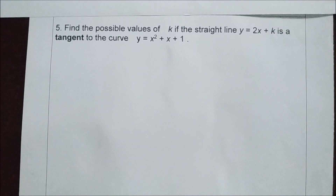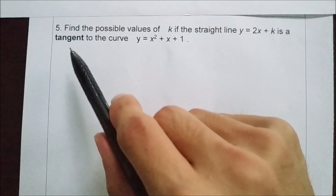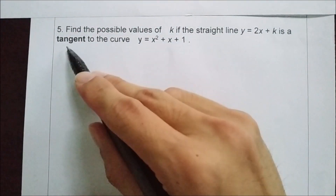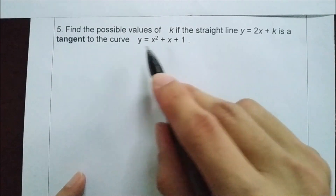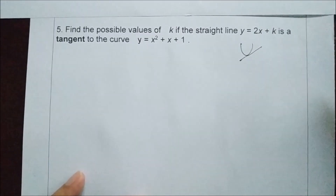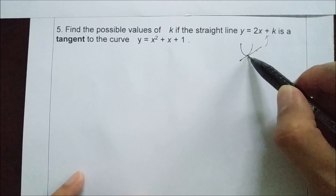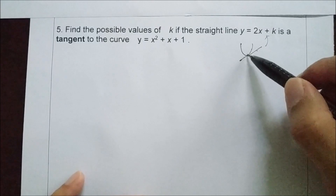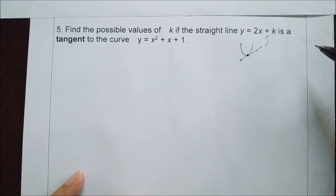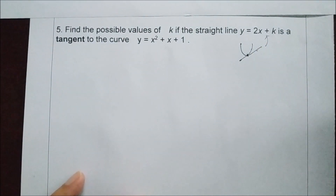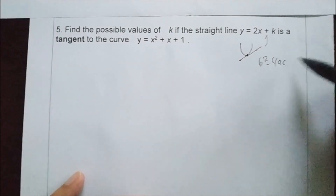Question number 5: Find the possible values of k if the straight line y equals 2x plus k is a tangent to the curve y equals x squared plus x plus 1. The word 'tangent' is key here. If this curve is given and the straight line is tangent to the curve, it means the line only touches at one point. So the intersection point is one point, meaning if you combine the two equations, you have one root. This implies b squared minus 4ac equals to 0.